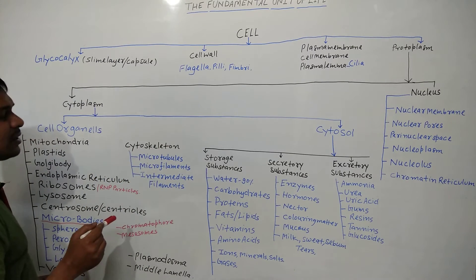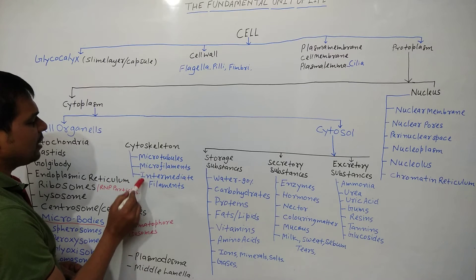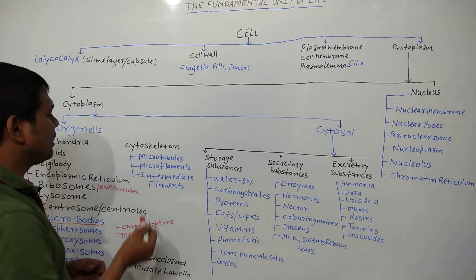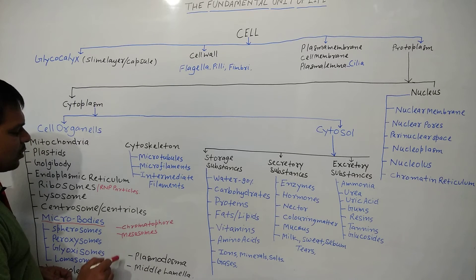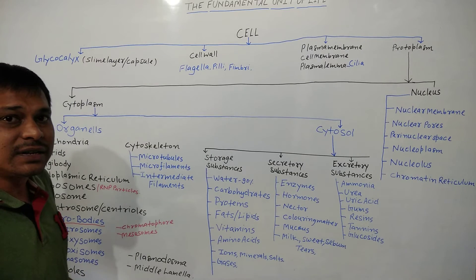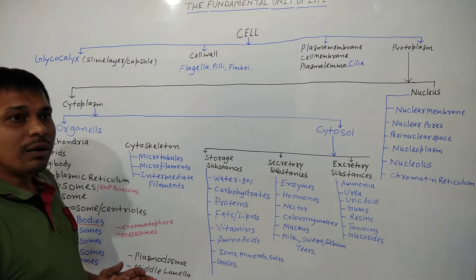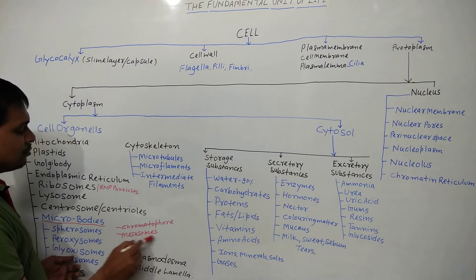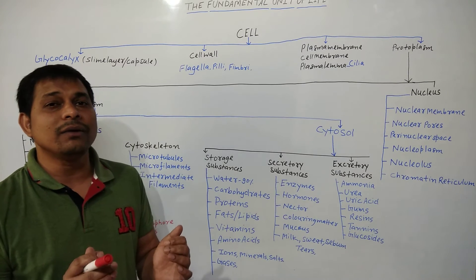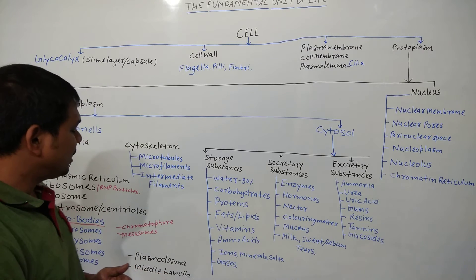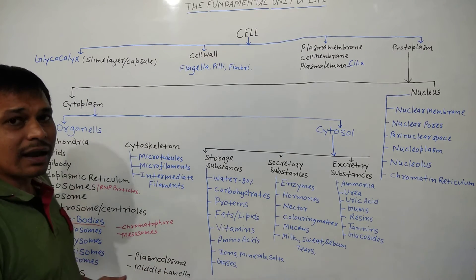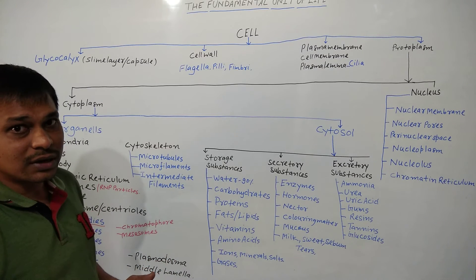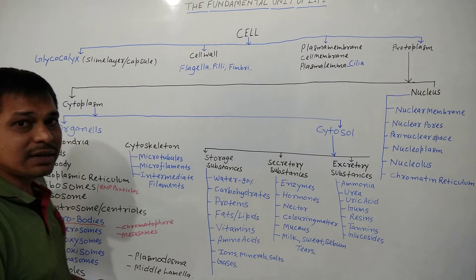Cytoskeleton consists of microtubules, microfilaments, and intermediate filaments, providing mechanical support, rigidity, and strength to the cell. Chromatophores and mesosomes are cell organelles present in prokaryotic cells. Chromatophores contain photosynthetic pigments like bacteriochlorophyll and bacterioviridine in bacterial cells. Mesosomes are formed by the folding of the cell membrane of prokaryotic cells; they are two to four per cell, and help in respiration, DNA replication, and distribution of chromosomes.